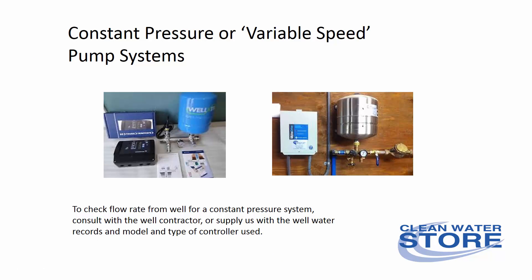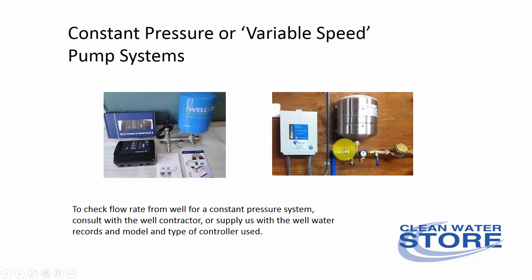This does not cover constant pressure variable speed pump systems. You can usually tell if you have a variable speed system because you have a very small pressure tank and a controller instead of a pressure switch. Chances are you know you have one because it maintains pressure at a specific level at all times.